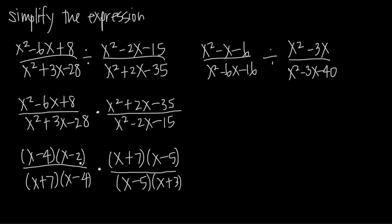Now we look to see if we can cancel within our fractions. In the first fraction, we can see right away that (x minus 4) in the numerator cancels with (x minus 4) in the denominator. In the second fraction, (x minus 5) appears in both numerator and denominator, so those cancel too. Then looking across the fractions — since they're multiplied together they form one fraction — (x plus 7) in the denominator cancels with (x plus 7) in the numerator. All we're left with is x minus 2 over x plus 3.